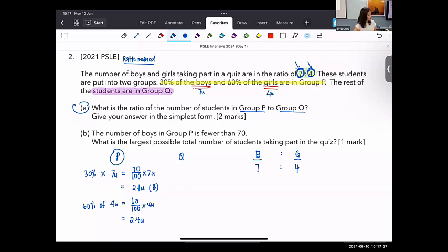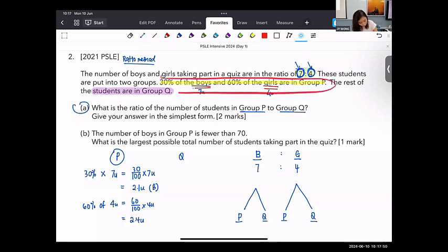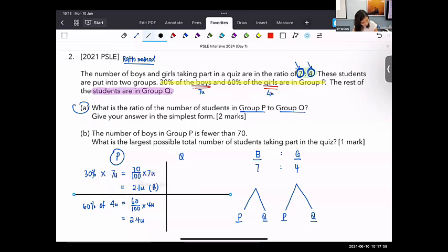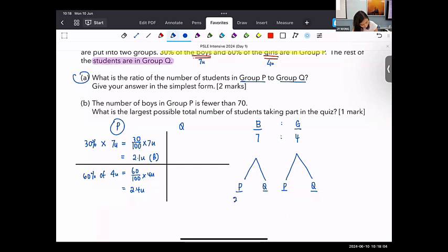Now, after I'm done with this, so what should I do? I am going to split the boys and girls into group P and group Q. Now, the only thing that we know, what they gave us was about group P. Whatever there are left, the rest will be in group Q. So what I can do now, I know P would have 2.1 units of boys. I already put 2.1. So this is 2.1. That means my Q would be 7 units minus 2.1 units. That would give me 4.9 units. So that is the number of boys in terms of units. And then for P, the number of girls is 2.4 units. So to find the number of girls, this would be 4U minus 2.4U. I will get 1.6 units.